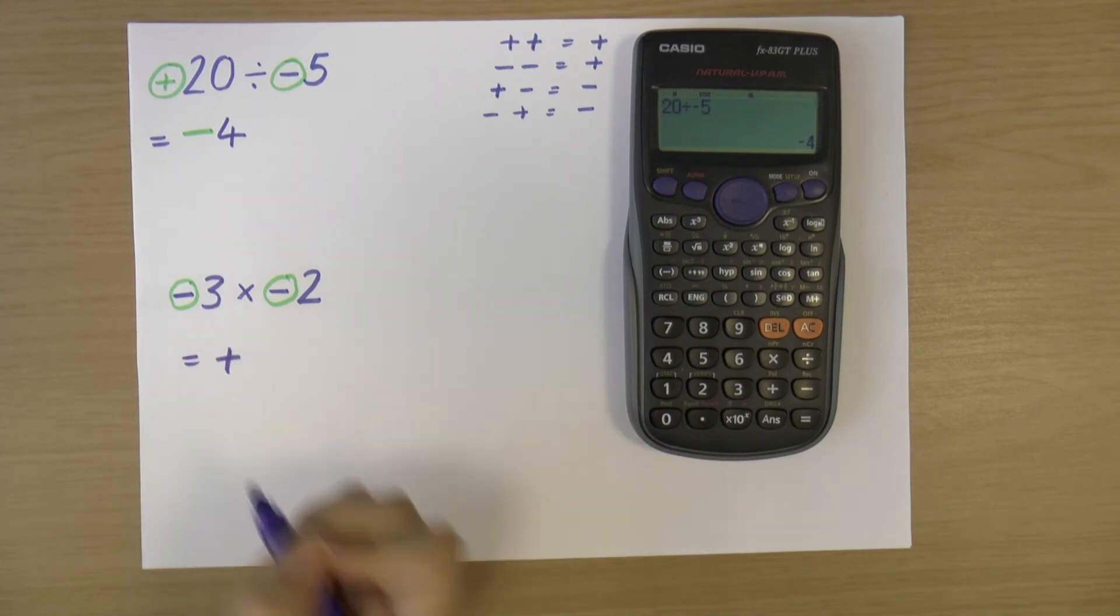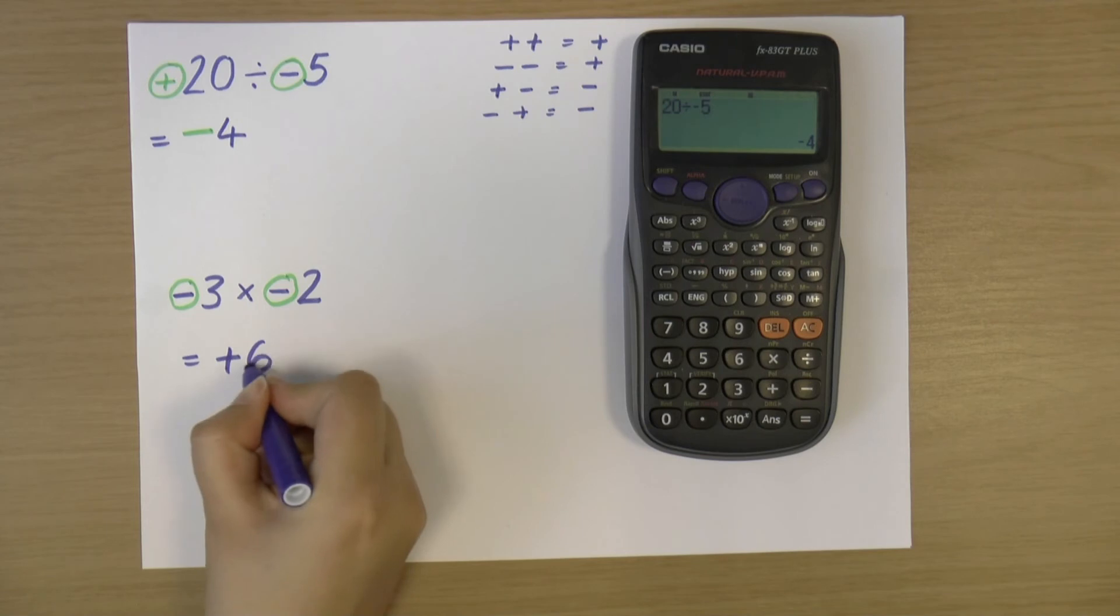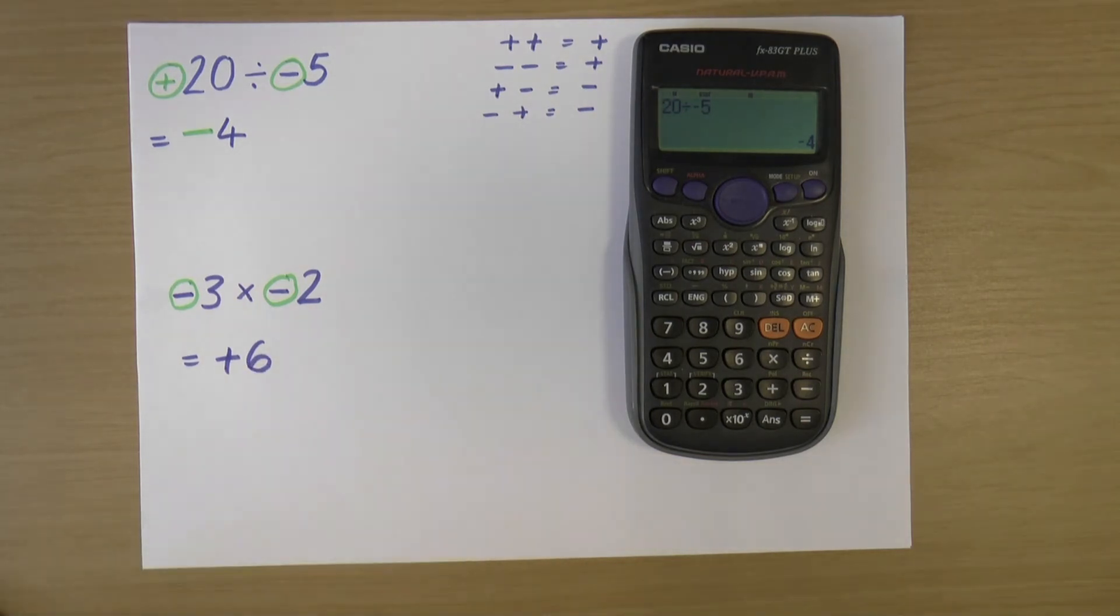It'll be a positive number. And now I can just ignore those symbols and do the sum with the numbers. So three times two is six. And so my answer will be positive six. Or we usually just write that as six.